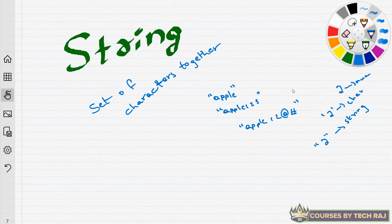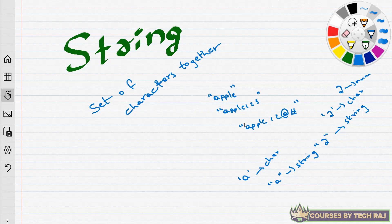Similarly, a small letter A in single quotes is a character, but if enclosed in double quotes it's interpreted as a string. Always remember: anything enclosed within double quotes is considered a string by the compiler. A string is a sequence or array of characters, and it's useful for storing any kind of text — which can include numbers, letters, special characters, or any combination.